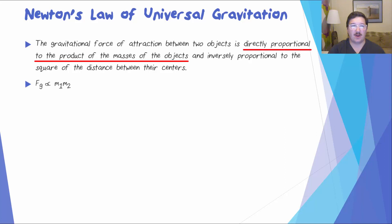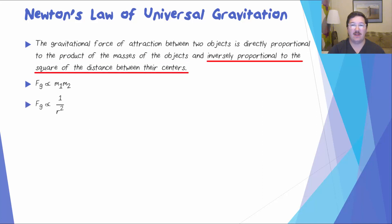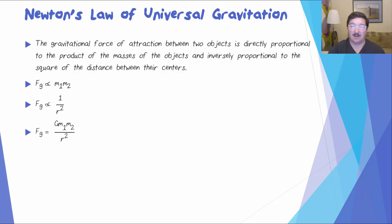Fg, the force of gravity, is directly proportional to M1 times M2, and Fg is proportional to 1 over R squared. If we put these together and include a constant G, we get the equation for the force of gravity: Fg equals G M1 M2 all over R squared.